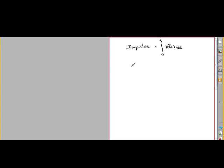That's one difference between impulse and work. Work is the integral from 0 to x of F(x) dotted with dx, which is a vector. So the dot product of two vectors is a scalar — work is a scalar and doesn't have direction. Whereas impulse is a vector.